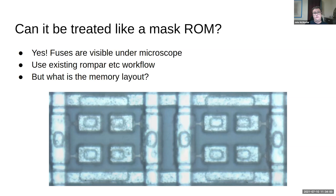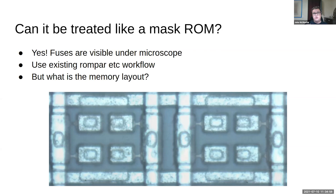We don't exactly know from this image what is a one and what is a zero, but by looking at a blank part, we can figure out that all-zeros is a blank part — so a shiny hourglass fuse is a zero. There's also existing tooling: a tool called ROMPAR does computer vision on memory layouts like this, converting them into a bit matrix — a text file of ones and zeros. But the bigger problem is: how do we know the memory layout? If we had a microcontroller, we might disassemble firmware, but with logic it's more complicated and abstract.